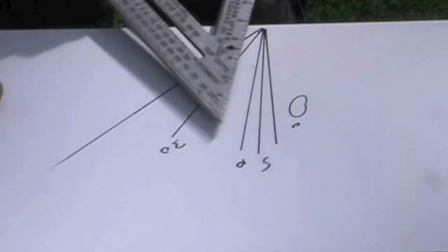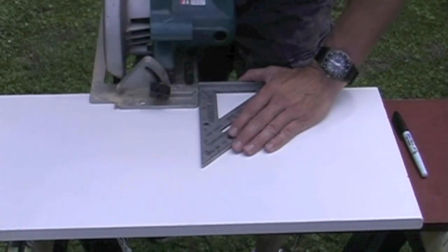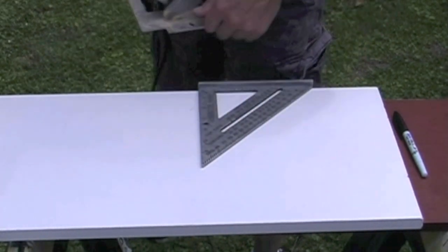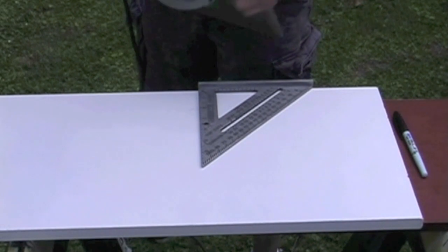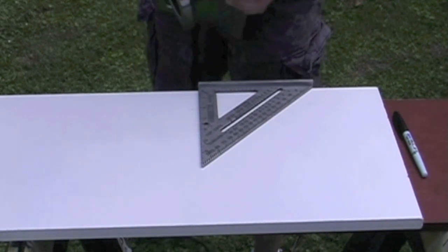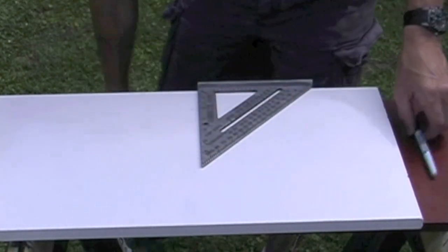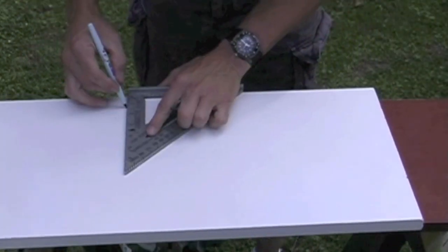The right angle square can also be used as a guide when making straight cuts or even miter cuts. I can take my saw, put it on whatever angle I need, in this case a 45 degree angle, and now I just mark my line where I want to make my cut.